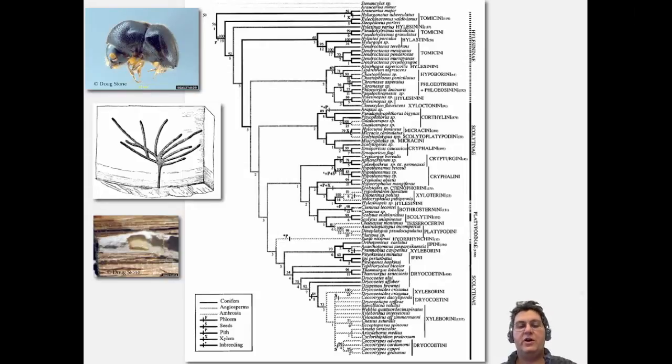The conifers, angiosperms, where on the tree are they eating? Are they eating the phloem? Are they eating the seeds? Are they eating the pith? The xylem? And other traits too. It's all shown in this tree and reconstructed, and you can figure out when did they switch from conifers to angiosperms, when another few times did that happen?